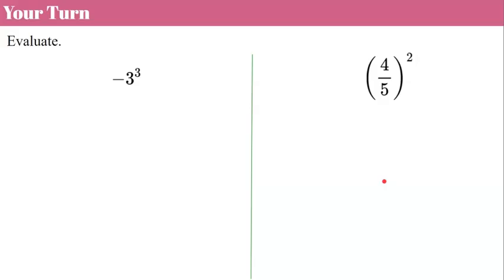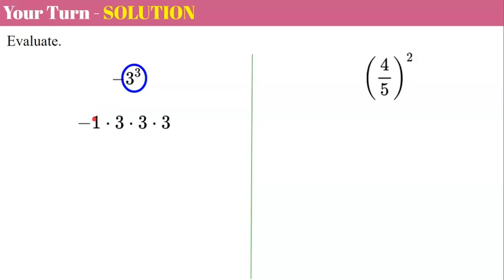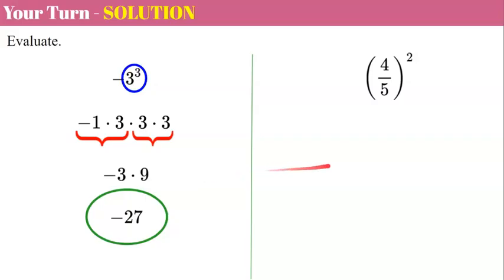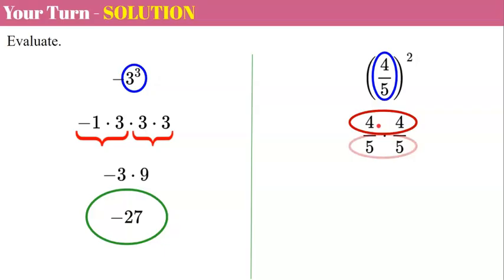Pause the video, evaluate, and come back to check your work. There are no parentheses in this power, so the base is just 3 — this is negative one times 3 multiplied by itself three times. Negative one times 3 times 3 times 3: negative 3 times 9 equals negative 27. For the second one, the base is four-fifths because it's in parentheses: four-fifths times four-fifths gives us 16 over 25.